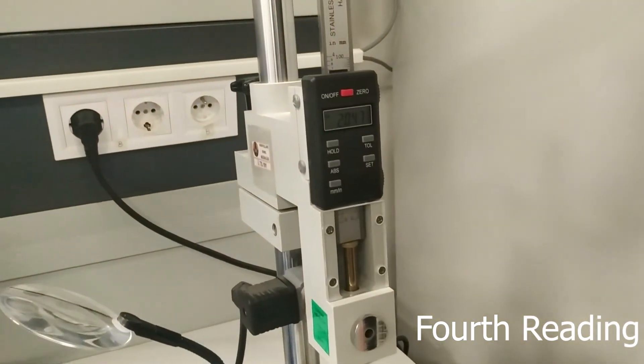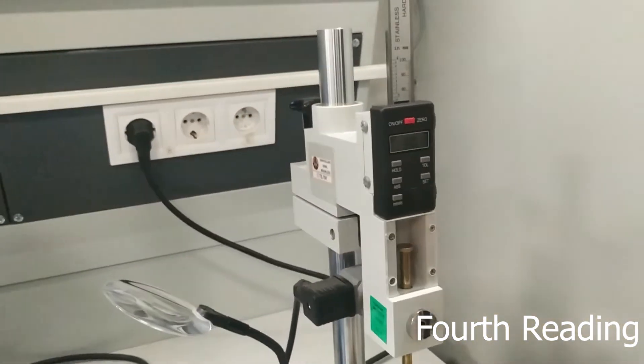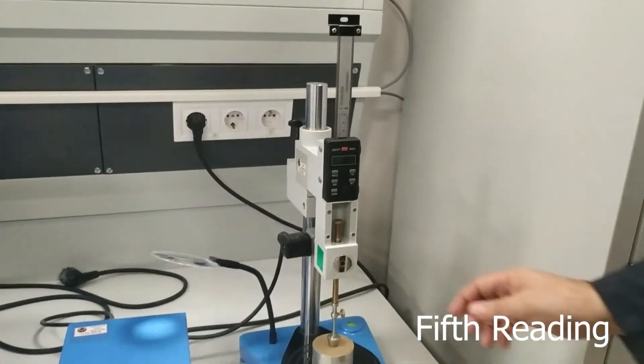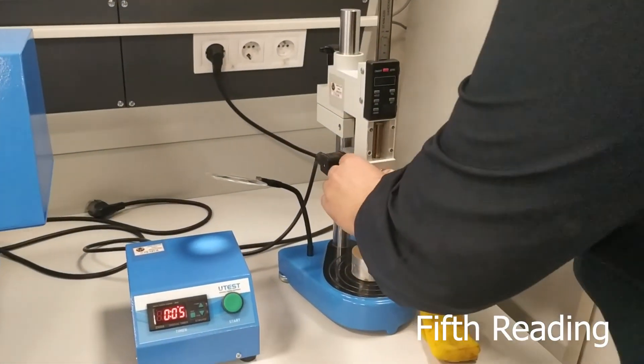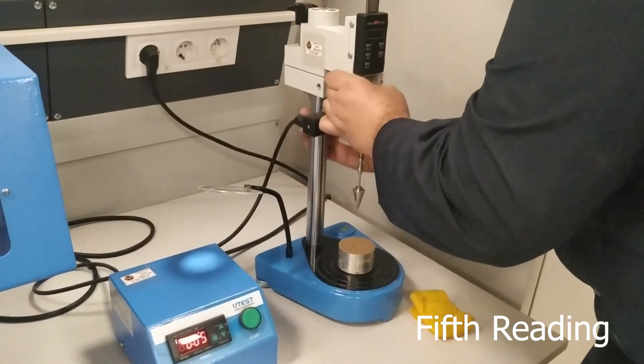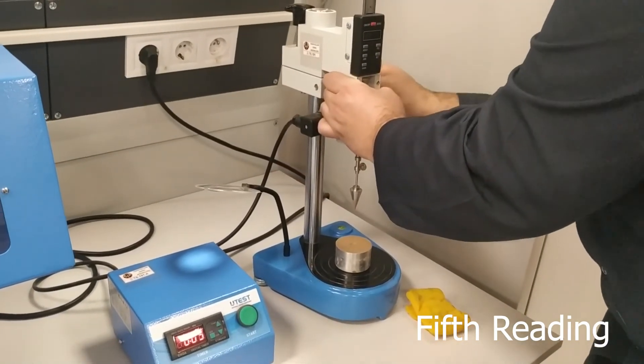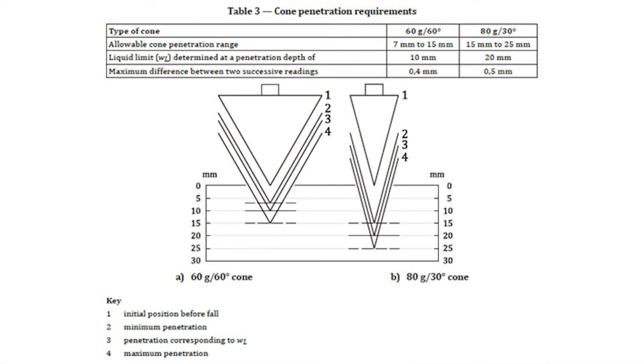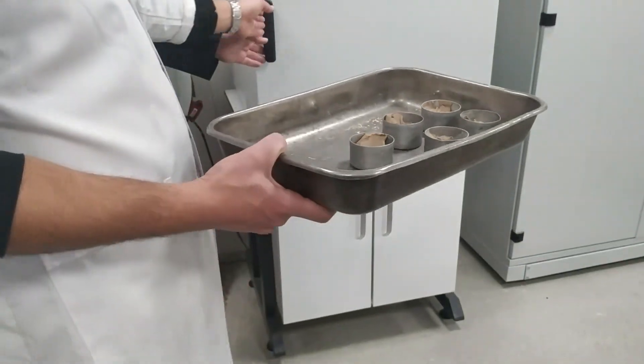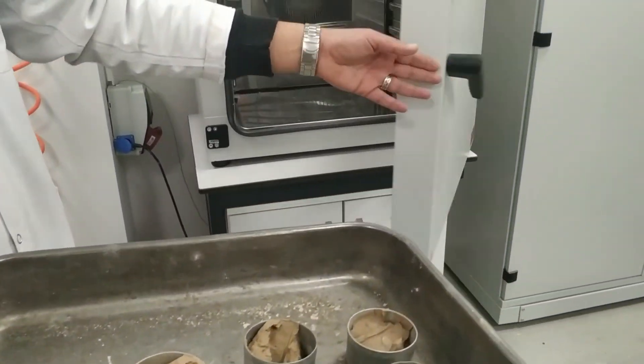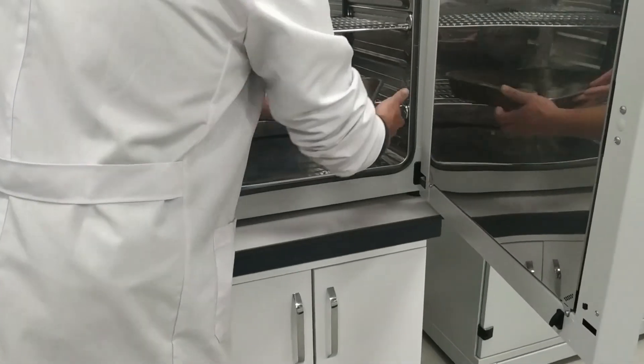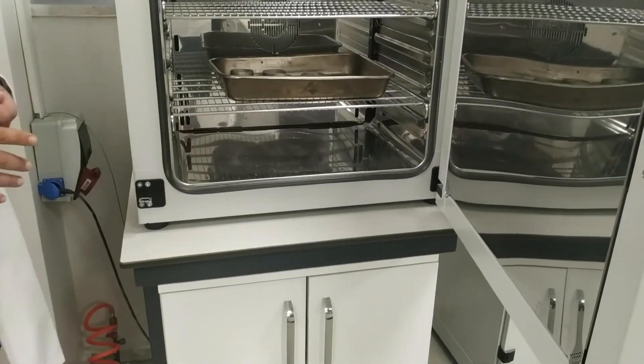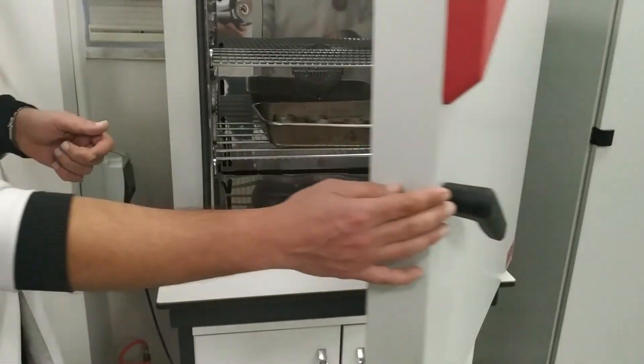Repeat the test for this new water content. The test shall be repeated enough times to give at least four test points at different water contents. The four points shall all be within the range specified in Table 3 and with at least one point above and at least one point below the penetration depth corresponding to the liquid limit. The four or more test points should be roughly evenly spaced across the penetration range in Table 3.